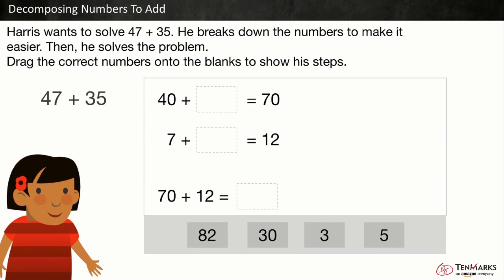First let's break down the numbers. 47 has four tens and 35 has three tens. So we can drag the 30 here since three tens from 35 is being added to the four tens from 47.